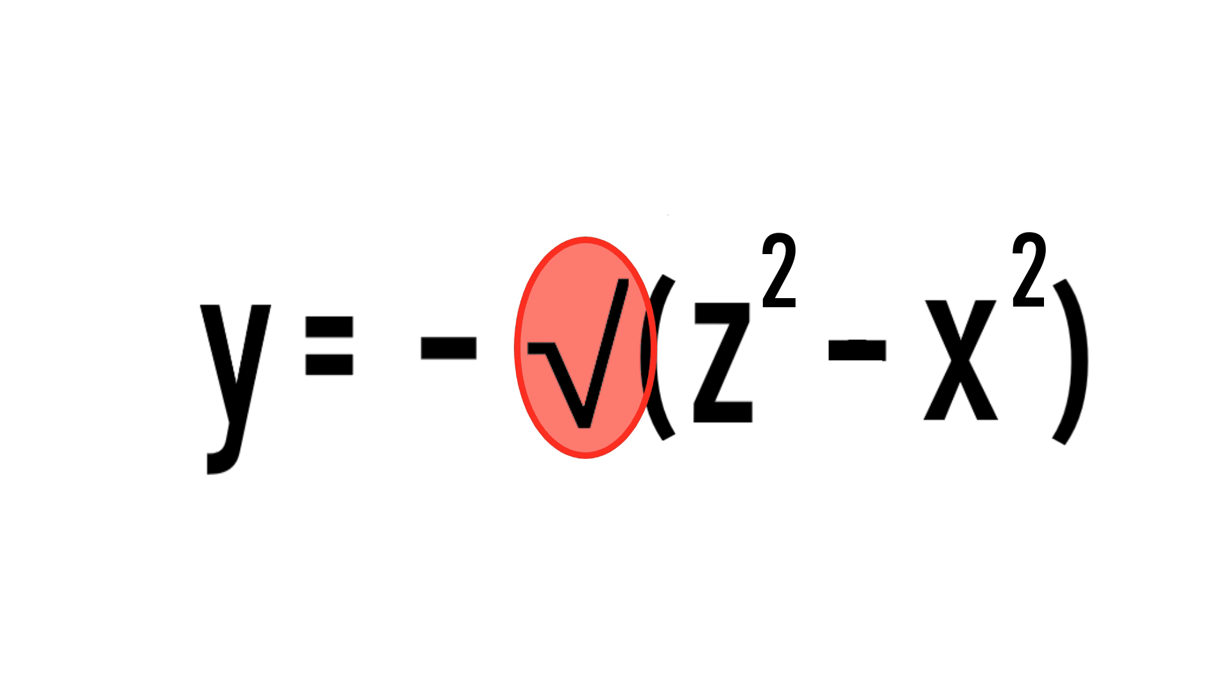Should we use the negative, positive, or both roots? Well, since we're only solving for the bottom half of the circle, which is where the player touches the ground, we only need to take the negative root. So here we have the equation for the circle.